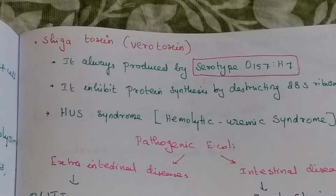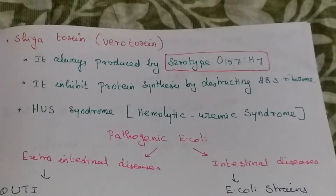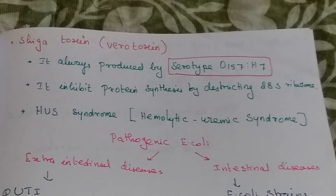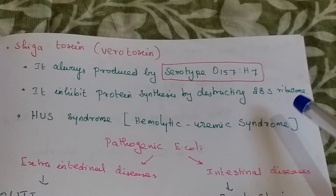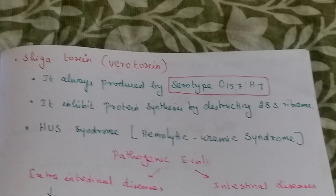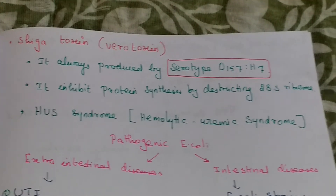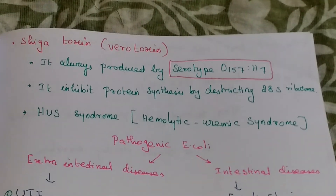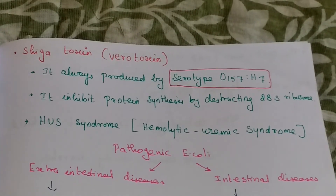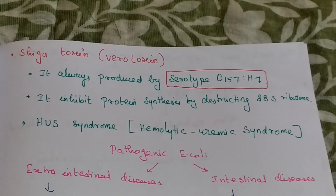The last toxin is Shiga toxin, otherwise called verotoxin. It is always produced by serotype O157:H7 of E. coli. It inhibits protein synthesis by disrupting the 28S ribosome. It causes hemolytic uremic syndrome (HUS).